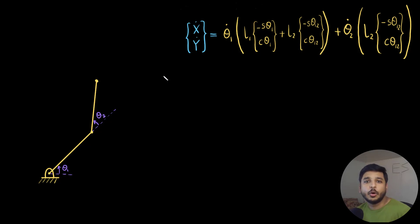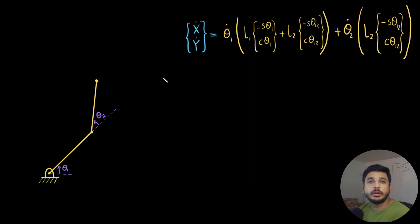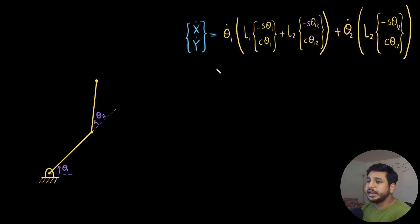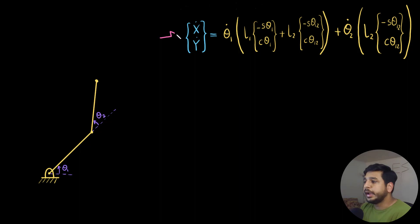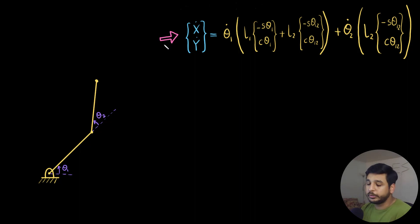Welcome to the second part on velocities of a robot. In the first part we covered what Jacobians are and how to find the velocities of a two-R robot. In that first part we came across a particular equation, and in this second part we are going to dissect that equation.